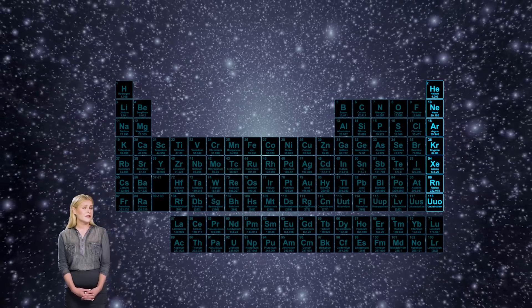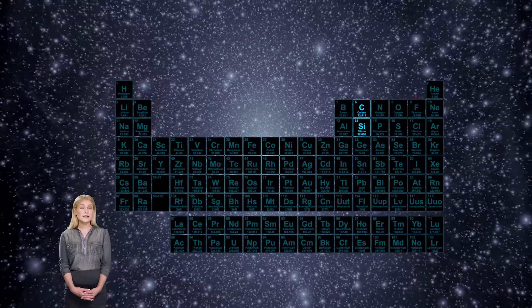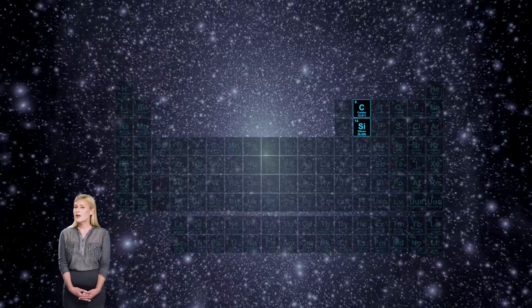All life on Earth is carbon-based. However, silicon is also very abundant in the universe and it belongs to the same group as carbon in the periodic table. It could be that alien life, if it exists, is silicon-based and not carbon-based.